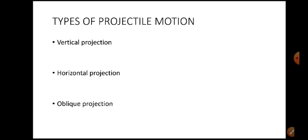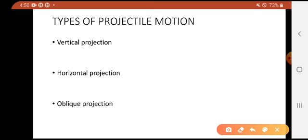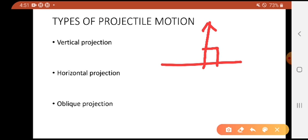There are three types of projectile motion: vertical projection, horizontal projection, and oblique projection. Vertical projection means projecting an object exactly upward, making a 90-degree angle with the surface. Throwing a ball exactly upward at 90 degrees to the floor is called vertical projection.